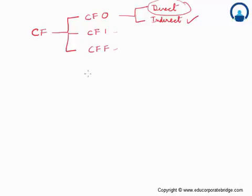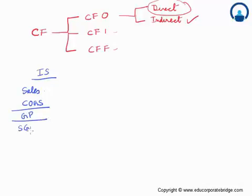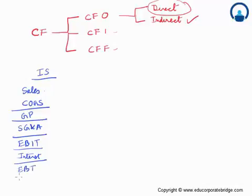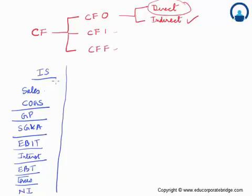The direct method involves going back to your income statement and redrawing it. The income statement shows: Sales, COGS, gross profit, SG&A (selling, general and administrative expenses), EBIT (earnings before interest and taxes), interest, EBT, taxes paid to the government, and finally net income. This income statement is prepared on the basis of the accrual method of accounting.